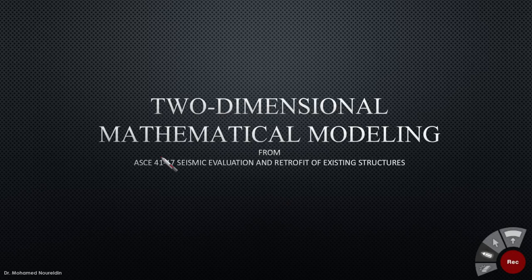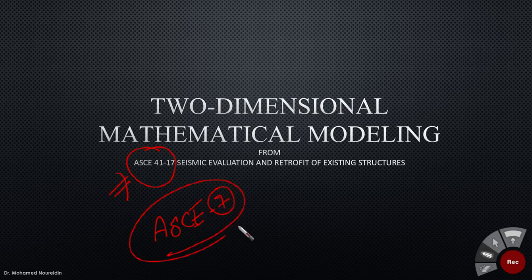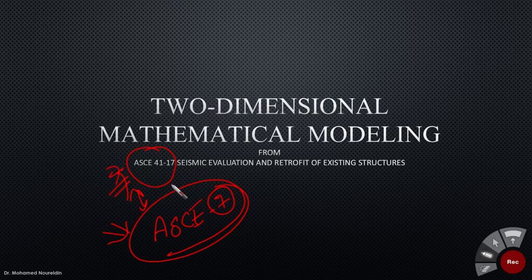Commonly we use ASCE 41 whenever we are dealing with evaluation or existing structures in general. But remember we also have ASCE 7, which is mainly for new structures. Bear in mind this difference whenever you are talking about any topic related to ASCE 41 or ASCE 7 — they are used differently.